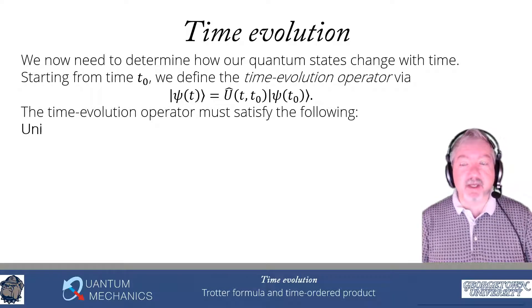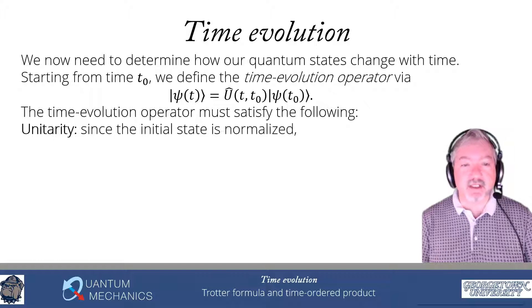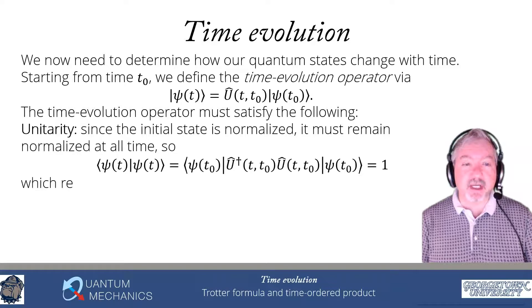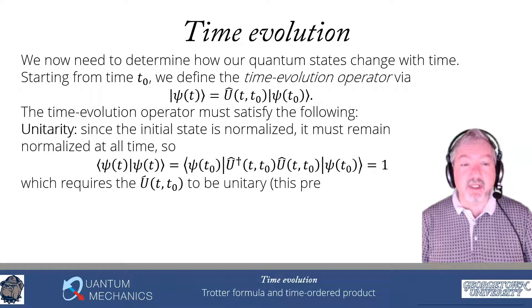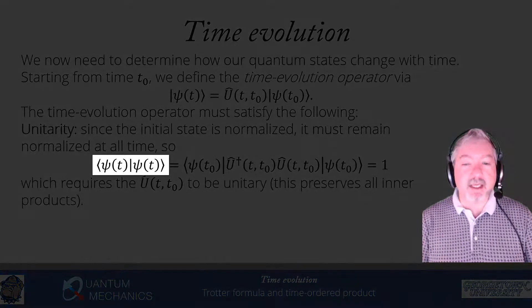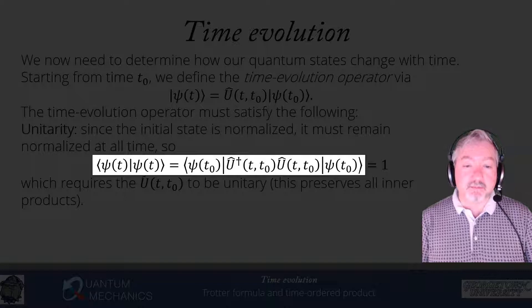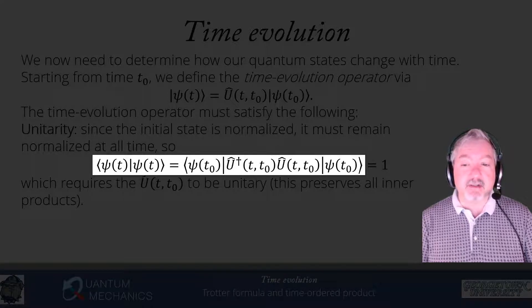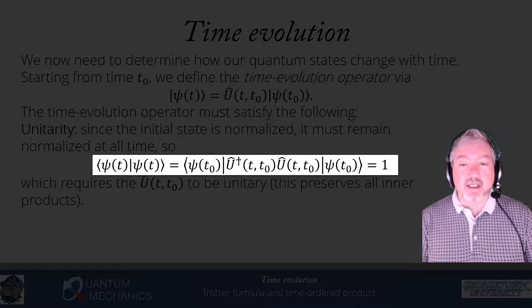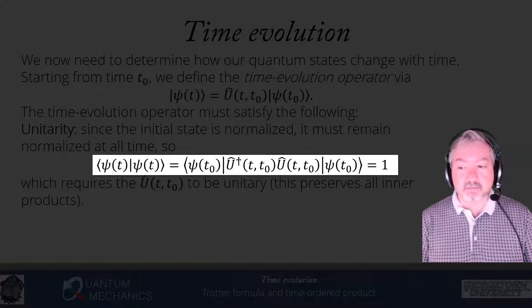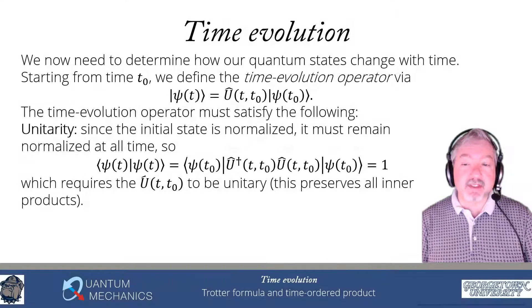The time evolution operator must satisfy the following conditions. The first is unitarity. The initial state ψ(t0) is normalized, and because probability is conserved, it must remain normalized for all time. So ⟨ψ(t)|ψ(t)⟩ equals ⟨ψ(t0)|U†(t,t0) U(t,t0)|ψ(t0)⟩, and that must equal 1. Since ⟨ψ(t0)|ψ(t0)⟩ = 1, if U†U = 1, that guarantees the norm is preserved. A unitary operator actually guarantees all inner products are preserved between any two states.